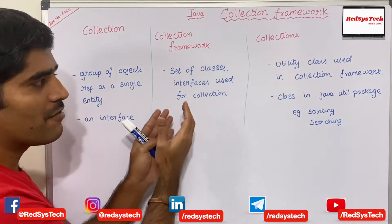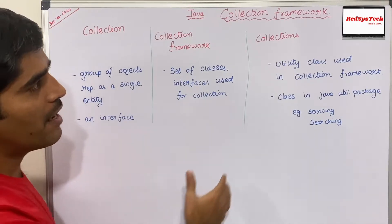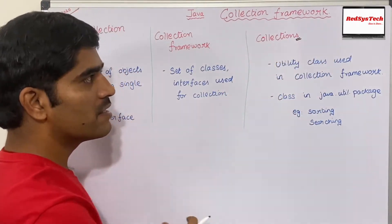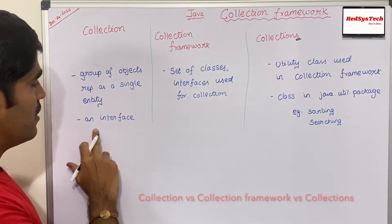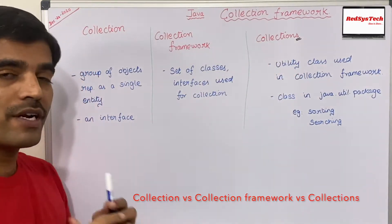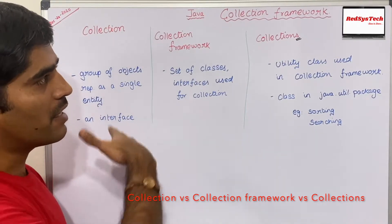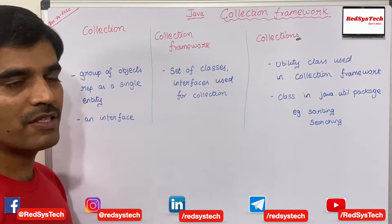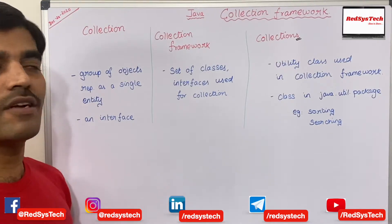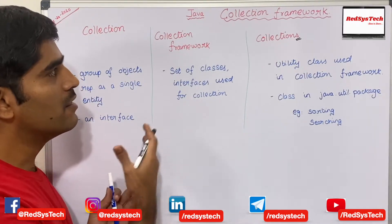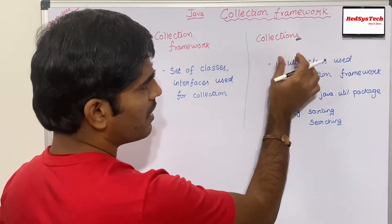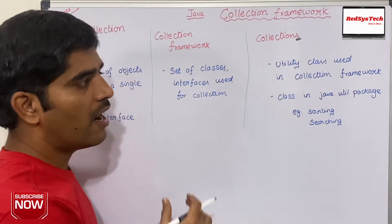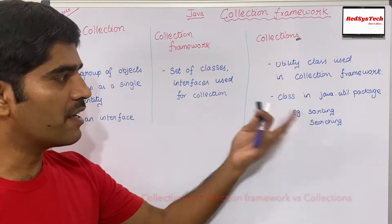So collection framework is nothing but a set of classes and interfaces which are used for collection. And what is collections? Collections is nothing but it is a class — a utility class. There is a plural here. But if you see collection, this is the interface. Collections is nothing but a utility class. Basically when Oracle Java developers introduced collections in Java, they thought they want to develop some methods which are kind of utility methods, where developers like us can simply use them to manipulate the data which we are storing in the collections framework. That is why they created a class called collections, which is a utility class that exists in the java.util package, where we can use it to deal with methods like sorting and searching.